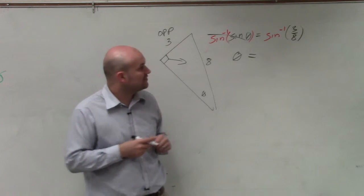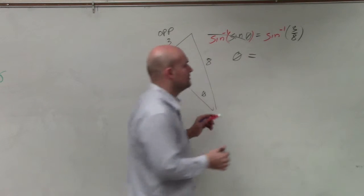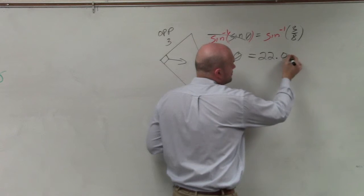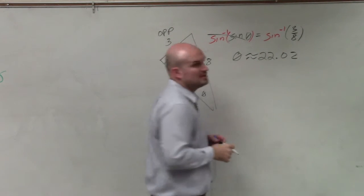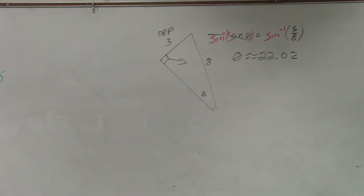So sine inverse of 3 over 8. Anybody get that? 42.024. Wait, did you say that again? 42.024. Is that rounded? Yes. OK. Just notice how I'm just doing approximate, right? Because that is an answer that goes on and on, so it's going to be approximate. 42.024.